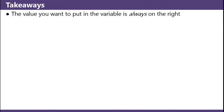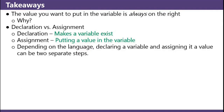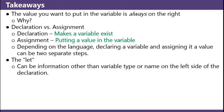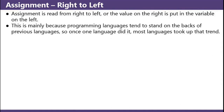The value you want to put in the variable is always on the right. Declaration versus assignment: declaration makes a variable exist, while assignment puts a value in the variable. Depending on the language, declaring a variable and assigning it a value can be two different steps. Assignment is right to left — the value on the right is put in the variable on the left. This is mainly because programming languages tend to stand on the backs of previous languages, so once one language did it, most languages took up that trend.